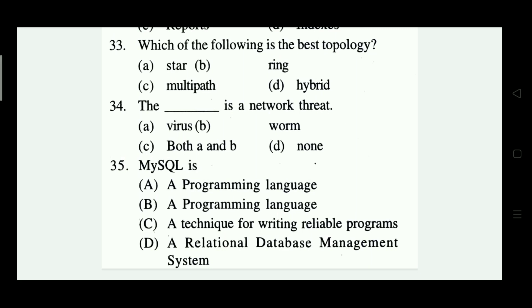Which of the following is the best network topology? Options: star, ring, multipath, hybrid. The right answer is Option C — multipath is incorrect; the answer given is Option C.